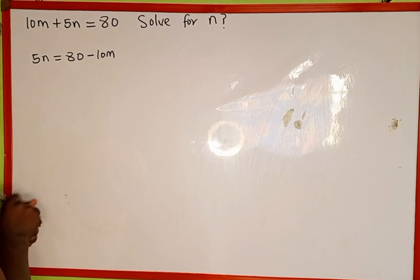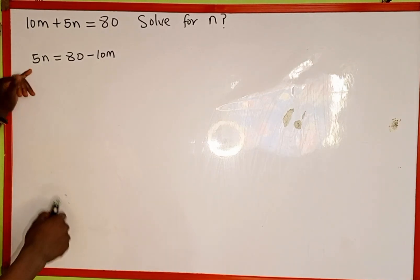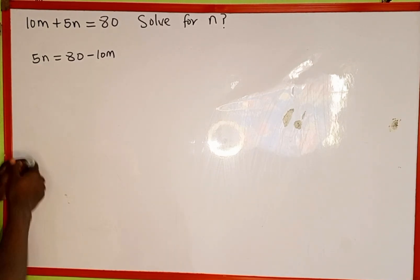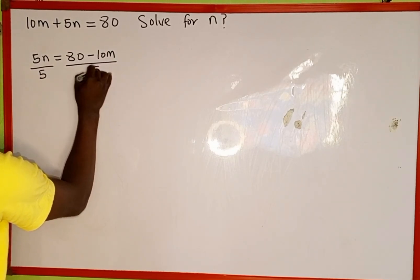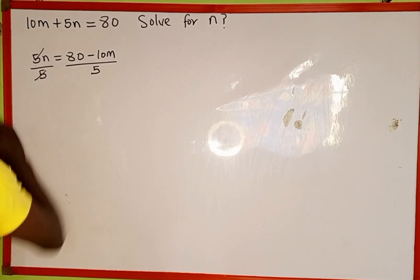So the next thing we're going to do is divide both sides of this equation by 5 so that this 5 is going to cancel. We're going to divide by 5, and also everything here by 5, so that this 5 cancels this 5.